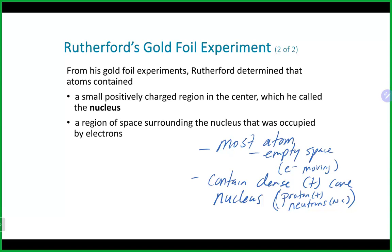Another major difference between the Plum Pudding model and the current model is that in the Plum Pudding model, most of the atom's mass was thought to come from electrons. In reality, most of the atom's mass is actually the nucleus.